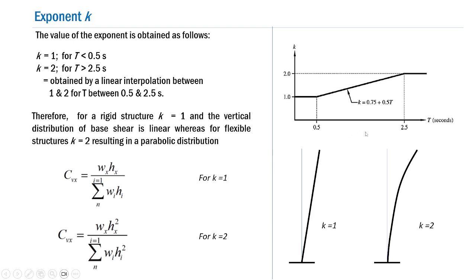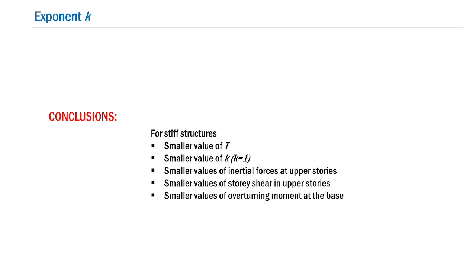For the other extreme, K equals 2, applicable to flexible structures. Substituting K equals 2, we have CVX equals WX times HX squared divided by the summation of WI times HI squared, for I varying from 1 to N. This expression tells us that CVX is proportional to HX squared — in other words, the distribution of the total base shear VB along the height of the building will be parabolic, as shown in the sketch for K equals 2.